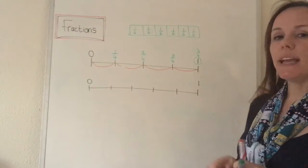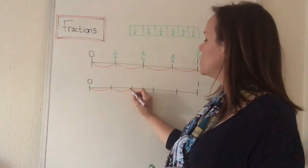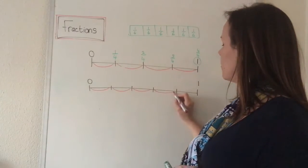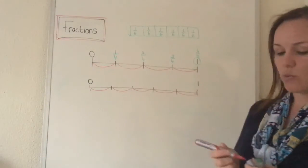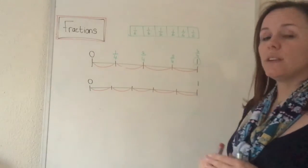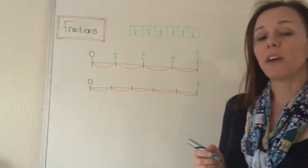Okay, let's look at the next one also. Let's count the spaces: one, two, three, four, five spaces between zero and one. That means my whole was divided in five spaces. That means it's fifths.